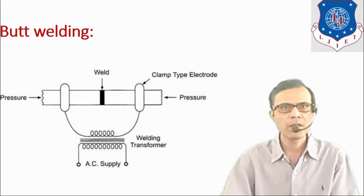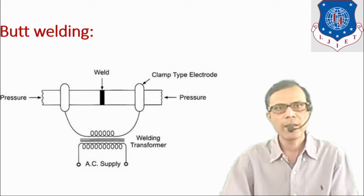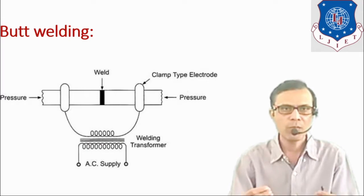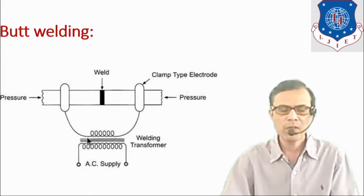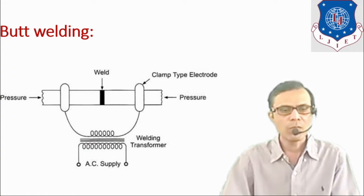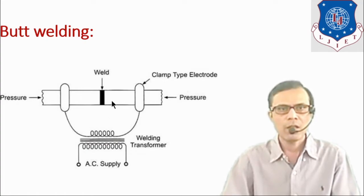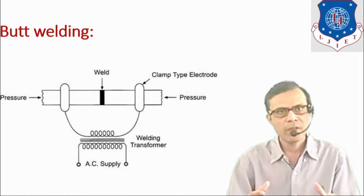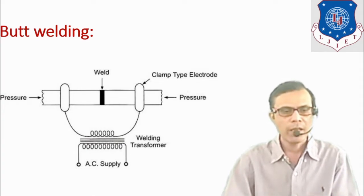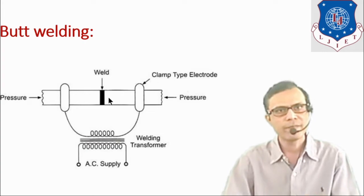The next type is butt welding. This type is different from a lap joint, where two workpieces overlap with each other. In butt welding, the two ends of the workpieces come in contact with each other and are joined as shown. It uses a welding transformer and clamp-type electrodes where the workpieces are clamped. When the two workpieces are brought into contact, high pressure is applied and simultaneously high electric current passes through the zone, melting the affected area so both workpieces are welded together.